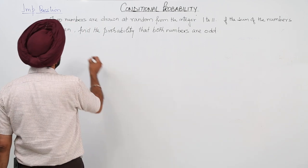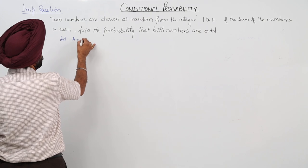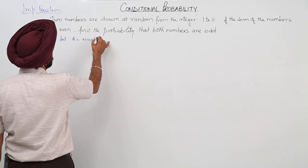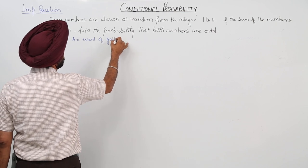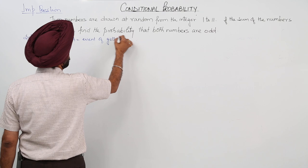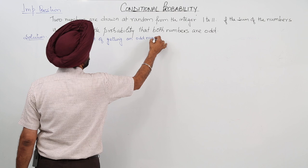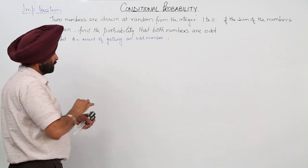So now let A is equal to event of getting an odd number.